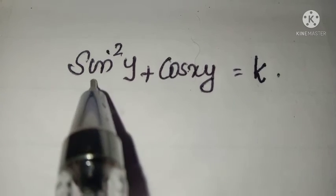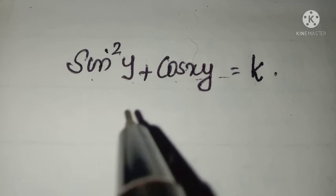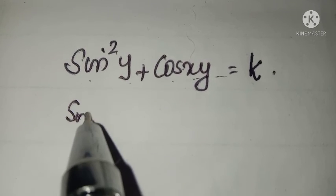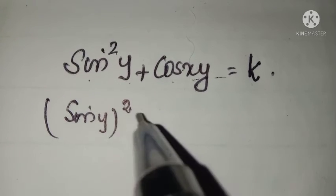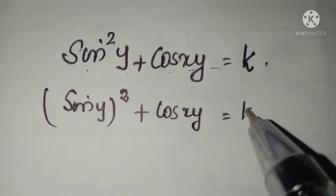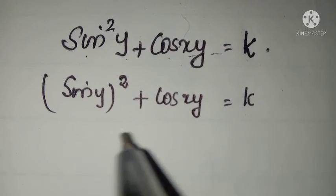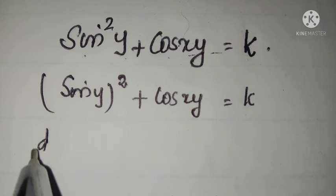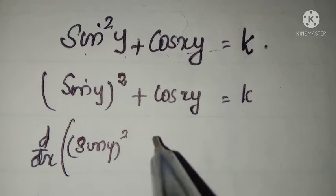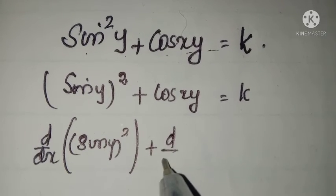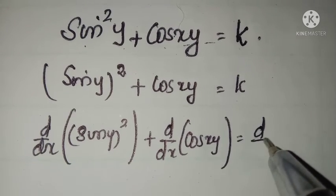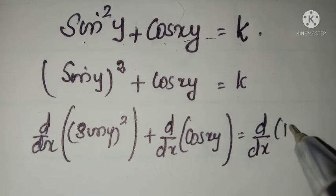Next, we go to sin squared y plus cos(xy) equals k. Sin squared y can be written as sin y the whole square. We want to find the derivative of all these terms: derivative of sin y whole square, plus derivative of cos(xy), equal to derivative of the constant k.